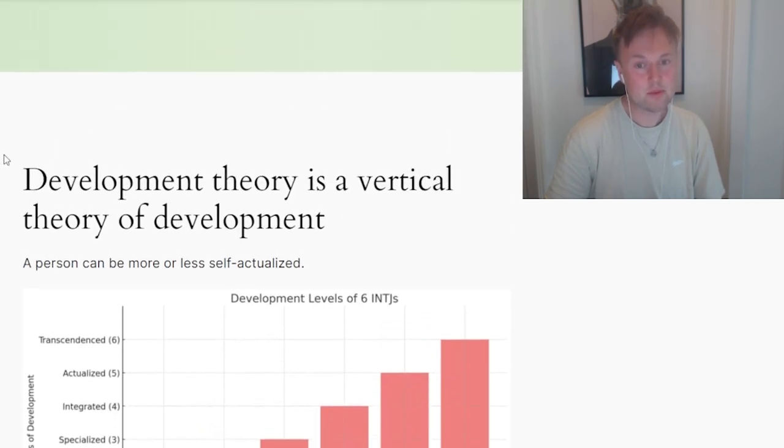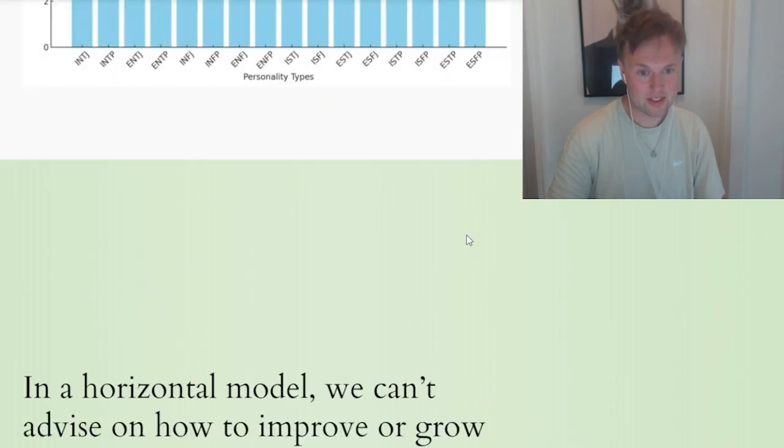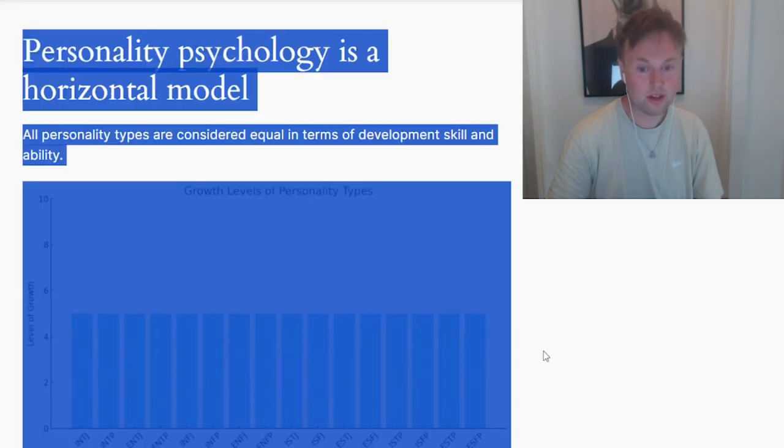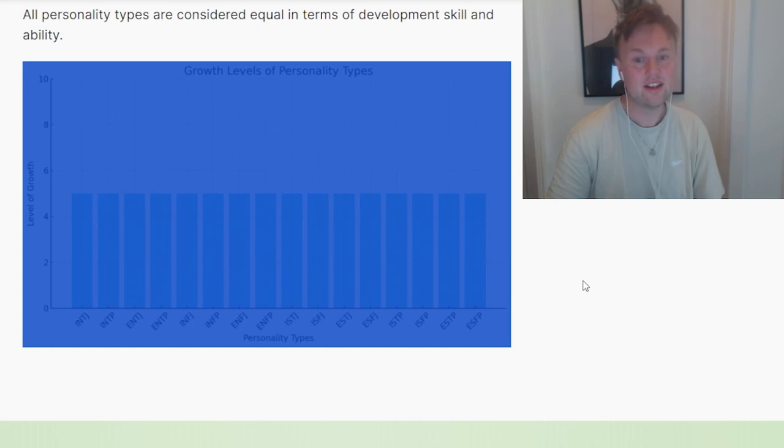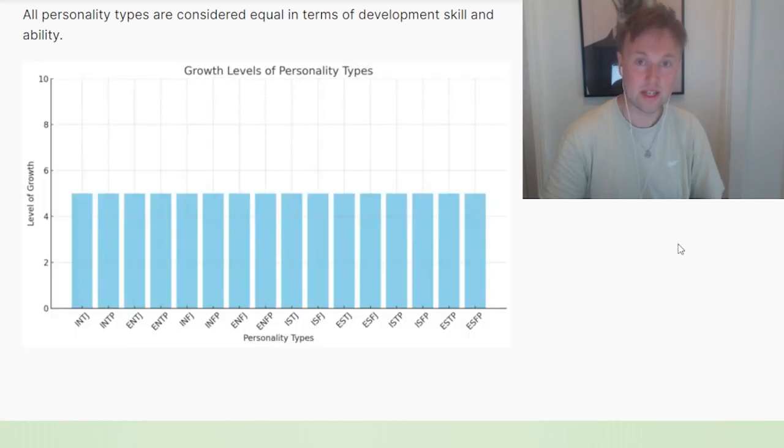So I came to move towards vertical theories of development and I came to reject these horizontal models of development because I realized their limitation when trying to be a good coach. I have people come to me for coaching every week. I have to think about what I can do to help them grow and develop. And if I tell them, well, you're just an INTJ.